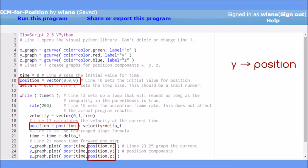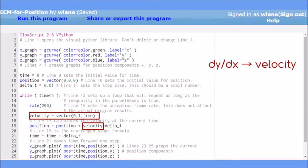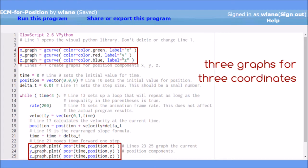Our independent variable is now time instead of x. Our function is now the position vector. Our derivative is now the velocity, which is also a vector. And we now have three graphs, one for the x coordinate, one for the y coordinate, and one for the z coordinate.